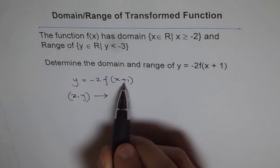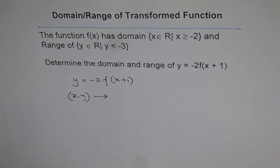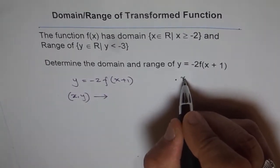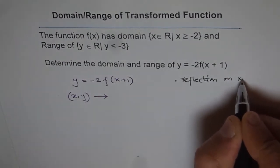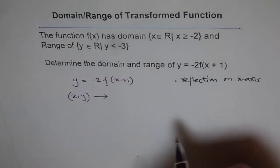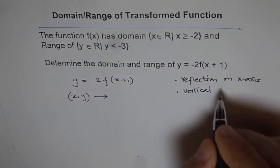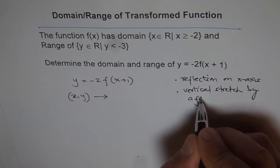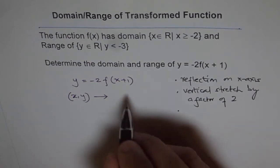Let me first write down the transformations. We have: (1) reflection on the x-axis, which makes positive y values negative; (2) vertical stretch by a factor of 2; and (3) horizontal translation 1 unit left.